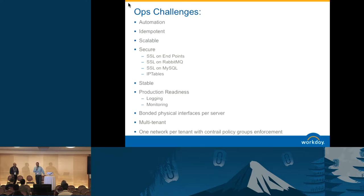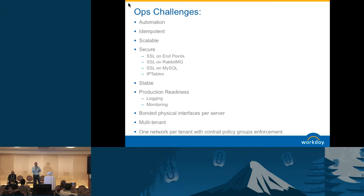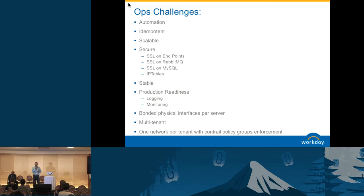Any OpenStack deployment requires some customization. In the case of Workday, it's even harder because we wanted to deploy multiple clouds across multiple data centers, serving different teams. So it was very important for us to have an automation system for deployment. Because of all these clouds, we want to have identical configuration across all of them — the same hardware configuration, the same network configuration, and the same software configuration running in all the data centers.